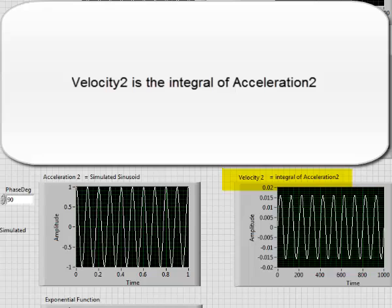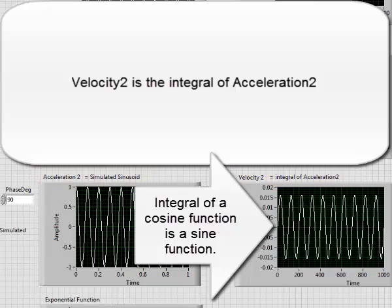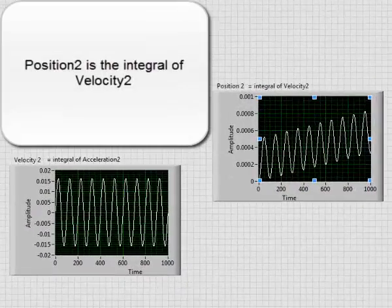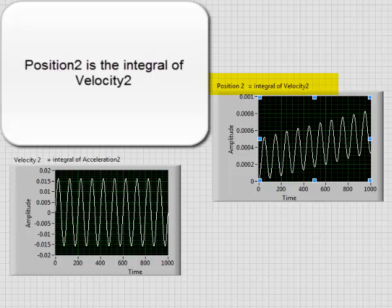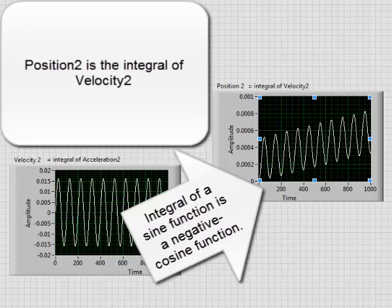Velocity 2 is the integral of acceleration 2. Integral of cosine function is a sine function. Position 2 is the integral of velocity 2. Integral of sine function is a negative cosine function.